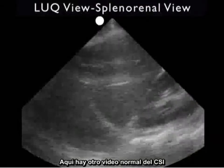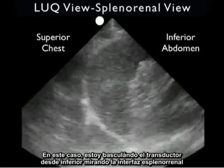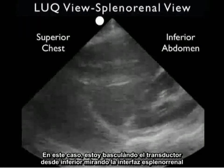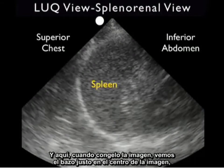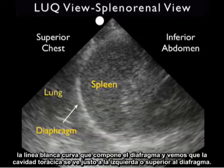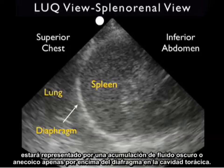Here's another normal video clip taken from the left upper quadrant. I'm swinging the probe from inferior — looking at the splenorenal interface — to superior, looking at that infradiaphragmatic space. As I freeze the image we see the spleen in the middle, the curving white line making up the diaphragm, and the thoracic cavity seen just superior to the diaphragm. If the patient had a significant hemothorax, that would be represented by a dark or anechoic fluid collection just above the diaphragm in the thoracic cavity.